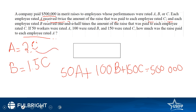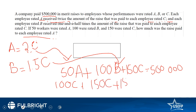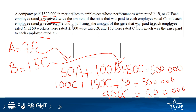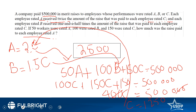Substituting A = 2C gives 100C. Substituting B = 1.5C gives 150C. So 100C + 150C + 150C = 500,000, which gives 400C = 500,000, so C = 1,250. A-rated employees got 2 times C, so they each received $2,500.